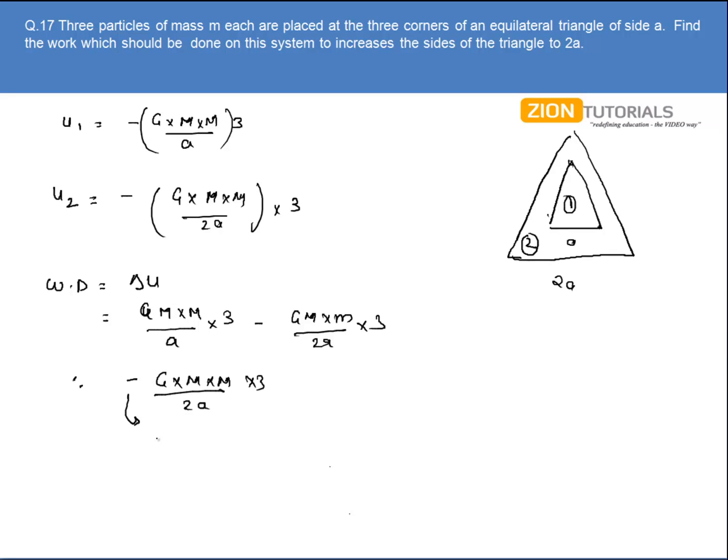The minus sign shows that work is done on the system. Otherwise, the magnitude is G M squared times three divided by 2A. That is the answer.